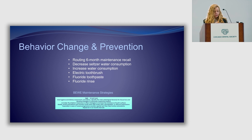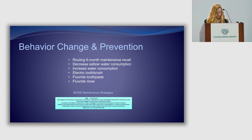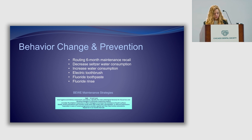What can we do with Steve? His BWI is 18, so regular six-month recall and check the ETW scores. Decrease the seltzer water. Why? Because adding carbon dioxide to water changes the acidity level from around 7 down to 4.5. CO2 plus H2O equals H2CO3 — carbonic acid. So increase water intake, possibly use an electric toothbrush, fluoride toothpaste, or a fluoride rinse to slow down the progression of the ETW.